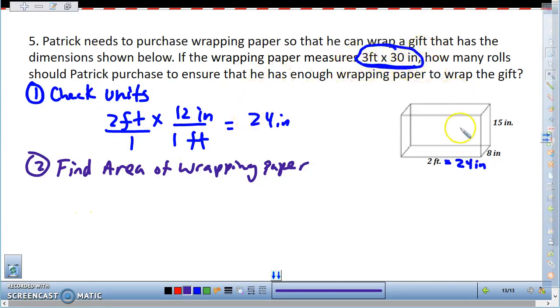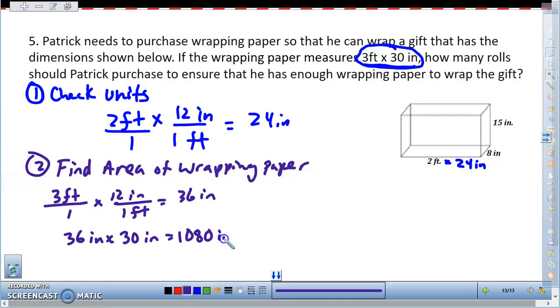So again, I'm going to convert to inches so I'm in the same units for everything. I'm going to take my 3 feet over 1 and multiply by 12 over 1 foot to give me 36 inches. So the area of the wrapping paper is going to be 36 inches times 30 inches, which comes out to be 1080 square inches.